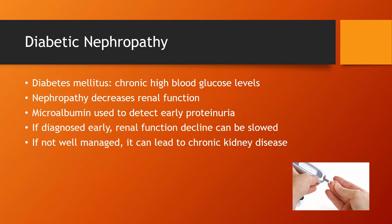Microalbumin testing is used to detect early proteinuria in diabetic nephropathy, picking up very low albumin levels that a dipstick would normally miss. If diagnosed early, renal function decline can be slowed by managing diabetes better. If diabetes is not well managed, the renal function decline can lead to chronic kidney disease.